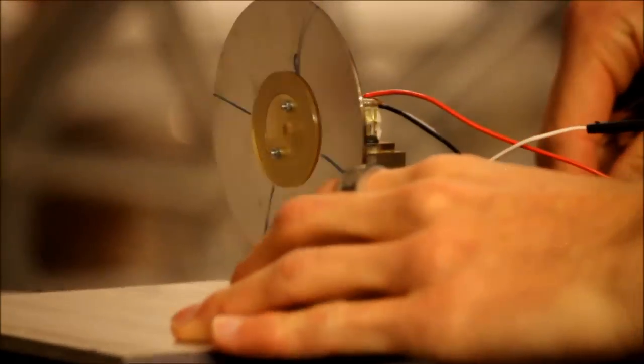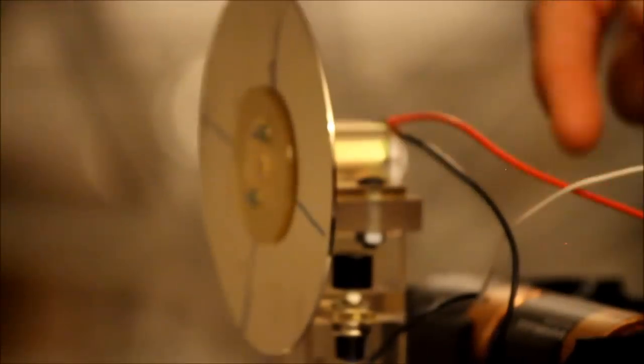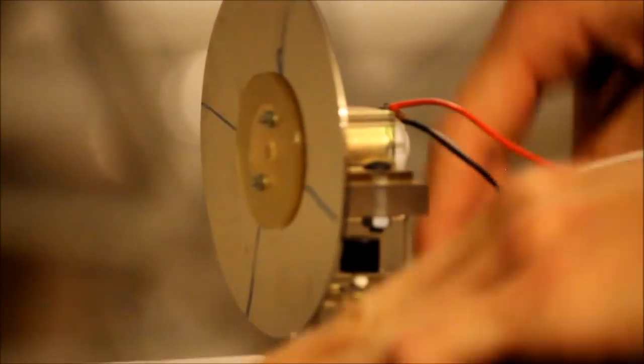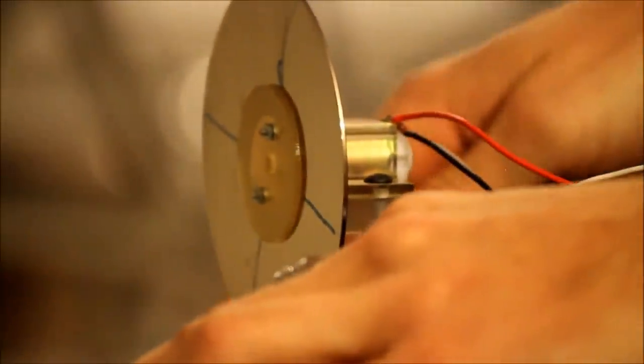What I have here powering the rotor is a simple 3 volt DC motor powered by two C cell batteries, which is about 3 volts, run through some ugly wiring to a push button switch to spool up the rotor.